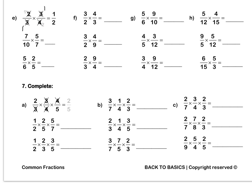Let's look at g. We can divide 5 and 10 both by 5: 5 divided by 5 is 1, 10 divided by 5 is 2. Then 6 and 9: we can divide top and bottom by 3. 6 divided by 3 is 2, and 9 divided by 3 is 3. Then we multiply out: the top we get 3, and 2 times 2 is 4. Press pause to complete up to question H by yourself.